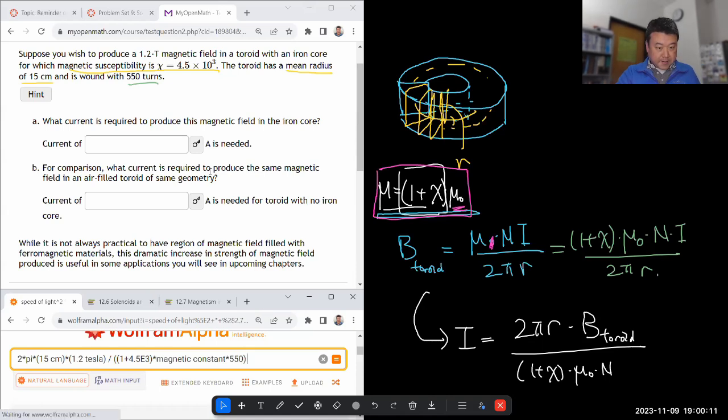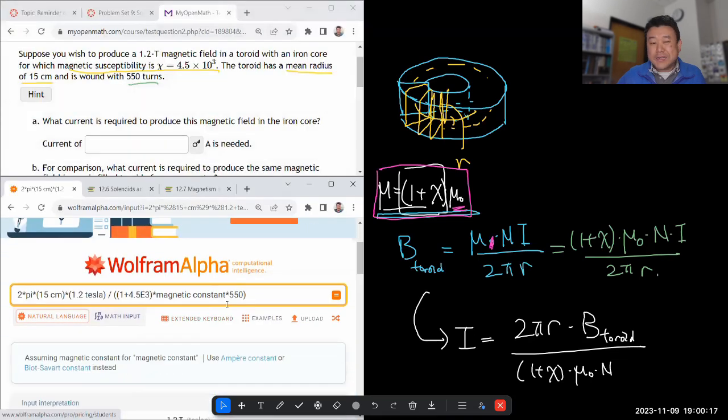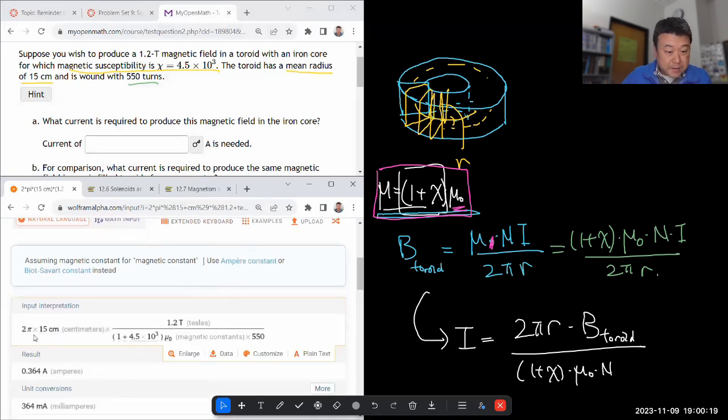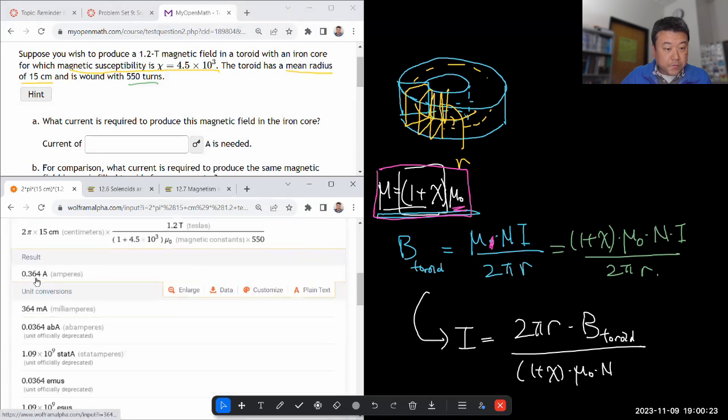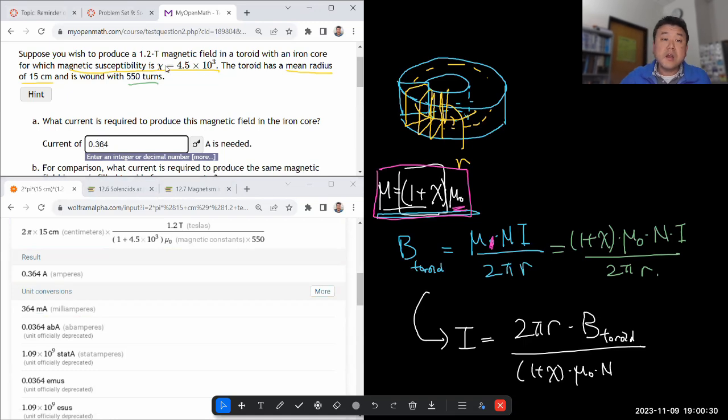I do prefer this name over permeability of free space, which can be hard to spell. Magnetic constant. Times n, 550 turns. Turns is not a unit. I don't have to write it. In fact, I think if I write it, it might confuse Wolfram Alpha. I haven't tried this. I don't know if it will actually confuse it. That looks right. So current is 0.364 ampere. Yeah, not that large. So this large magnetic susceptibility is giving a huge boost. And this is really useful when you are building inductors. So that's why we'll be using toroidal ferromagnetic core.